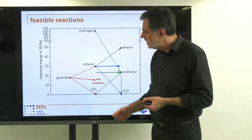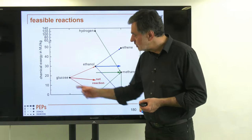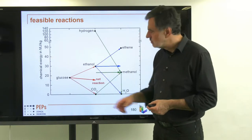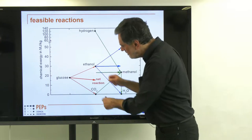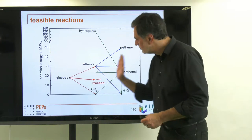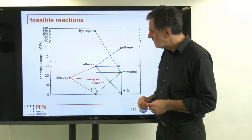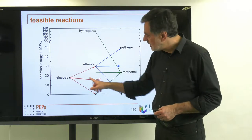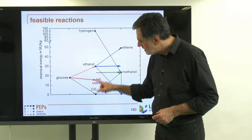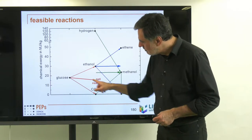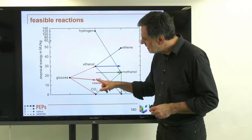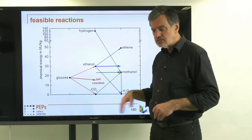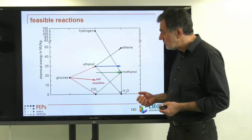As an example already shown in the previous video: the conversion of glucose by fermentation to ethanol and CO2. From one component, two different chemicals are produced. The net reaction change in exergy is shown by the main arrow — the chemical exergy of the two products, weighted by mass, gives an arrow pointing slightly downward, indicating a favorable reaction.